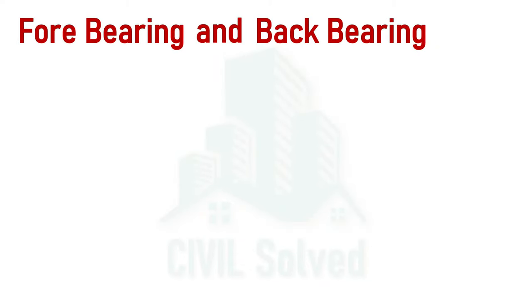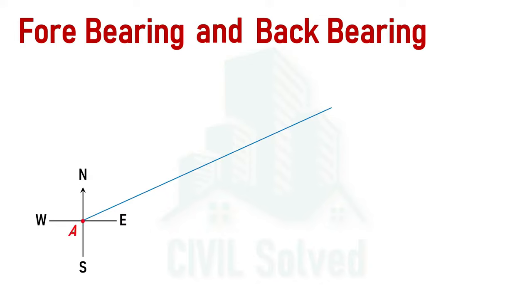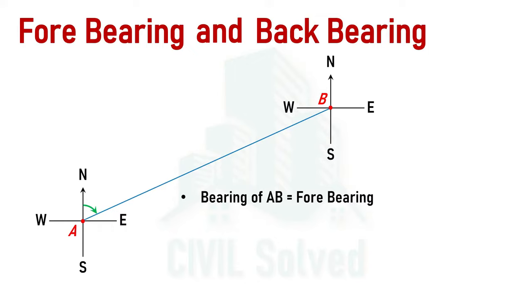Let's have an idea of what fore-bearing and back-bearing are. We know the standard directions. Let's say we have a line that lies in the northeast quadrant, the starting point is A and the ending point is B. The bearing obtained by placing the instrument at point A is the bearing of AB, or the fore-bearing. The bearing obtained by placing the instrument at point B and calculating the bearing of the BA line would be the back-bearing.